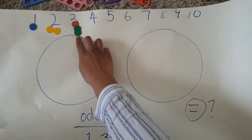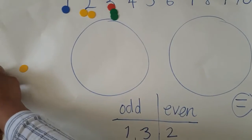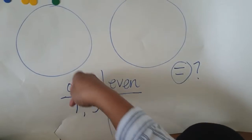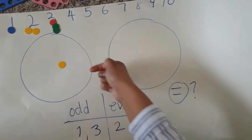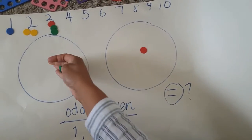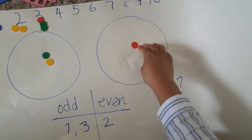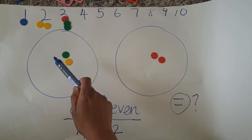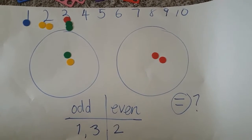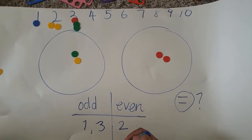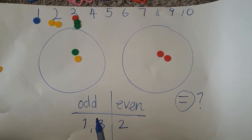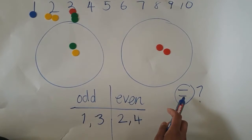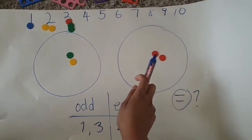Now let's take the number four. Okay, ready? I've got four counters here. One, two, three, four. Let's share them. One for you, one for you, one for you, and one for you. How many are there in each group? There are two here, and there are two here. So therefore, is four an odd or an even number? Well done. It is certainly even because both the groups are equal.